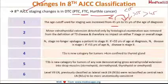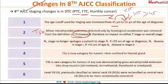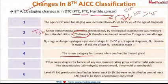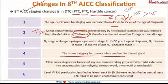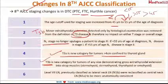The next update is regarding minor extrathyroidal extension. Previously, invasion of the strap muscles was staged under T3; now it has shifted to T3b. T3 is subdivided into T3a and T3b — T3a is a new category where the tumor is more than 4 centimeters but confined to the thyroid gland, while T3b involves invasion of the strap muscles.